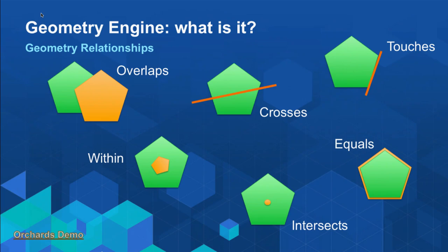We're going to break up the methods into three groups. The first group tests geometric relationships — does Geometry A overlap Geometry B? Is it within another geometry? Does one geometry cross another, intersect it, or is it exactly equal? When we talk about equal, it may not be exactly equal because you can work with spatial tolerance. There's also a touches function. The reason I like these methods so much is because they just give you a Boolean value back — does it touch or not? You can do a whole lot with that information without any complex processing.